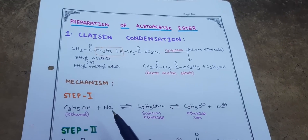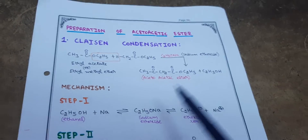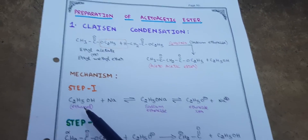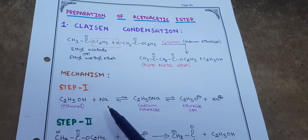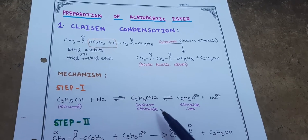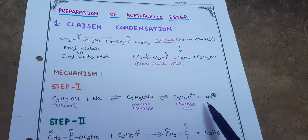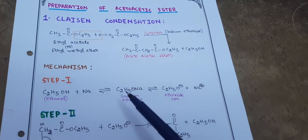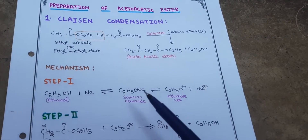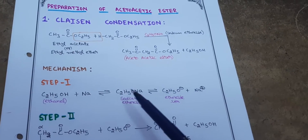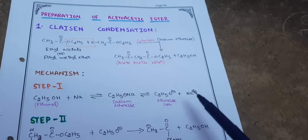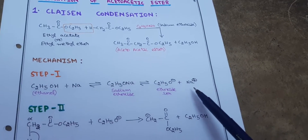Mechanism Step 1: This step covers the preparation of the reagent, sodium ethoxide. When a single mole of ethanol reacts with sodium, it forms sodium ethoxide. However, sodium ethoxide is highly unstable and does not exist for much time. It mostly exists as ethoxide ion (C2H5O-) plus sodium ion.